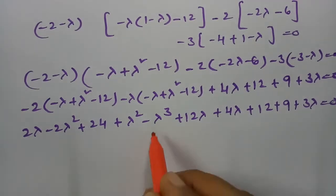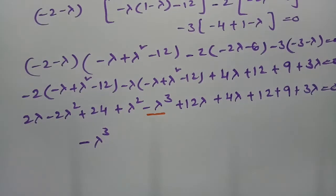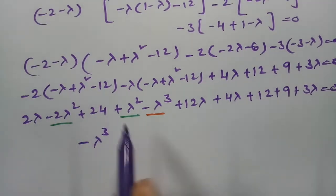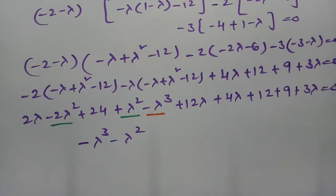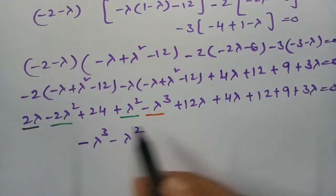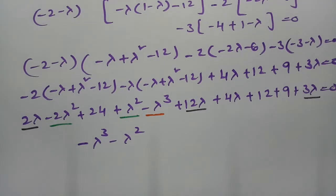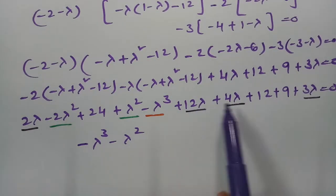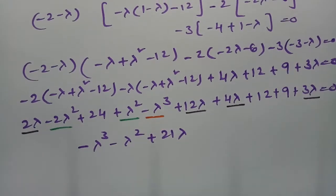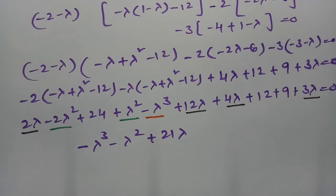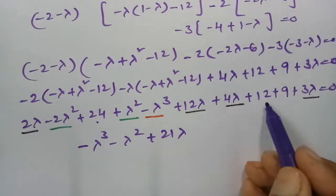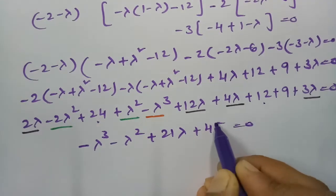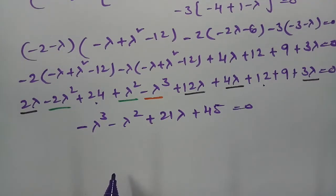Collecting terms: the λ³ term gives −λ³. The λ² terms: −2λ² + λ² = −λ². The λ terms: 2λ + 12λ + 4λ + 3λ = 21λ (wait, let me re-check — the instructor arrives at 21λ). The constants: 24 + 12 + 9 = 45. So the equation is −λ³ − λ² + 21λ + 45 = 0.